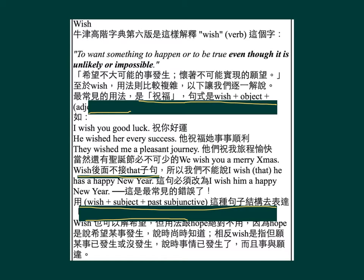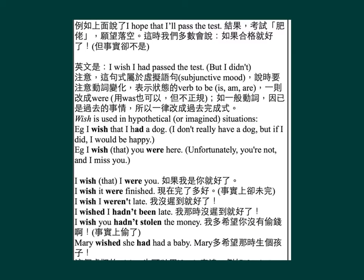用wish加subject加past subjunctive，这种句子结构去表达对现状的遗憾（present regrets）。Wish亦都可以解释希望，但用法跟hope绝对是不同的。Hope是说希望某件事发生，说的时候还有可能发生；相反wish是指但愿某事已发生或者未发生，说的时候事情已经是发生了而且事与愿违。例如 'I hope that I'll pass the test'，结果考试不合格，愿望落空，这个时候我们会讲：'I wish I had passed the test'，但 'I didn't'。